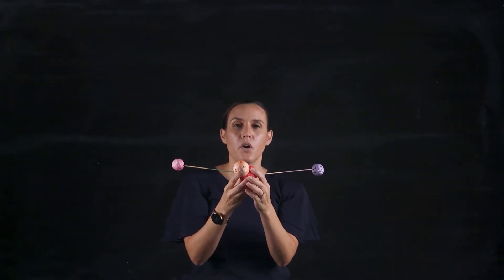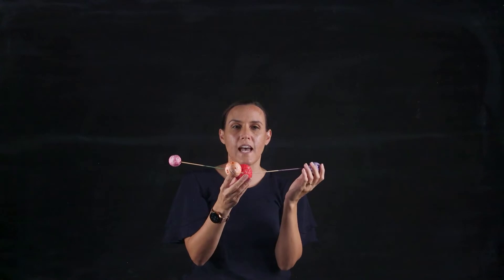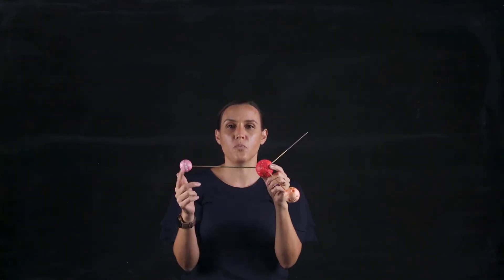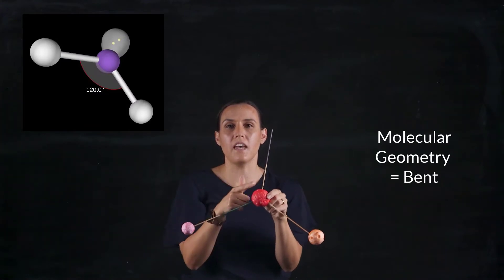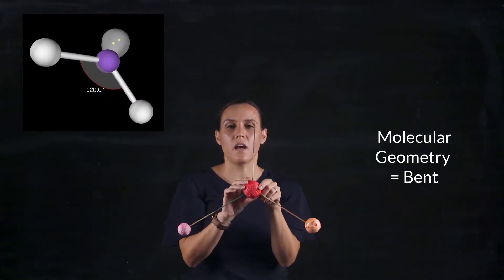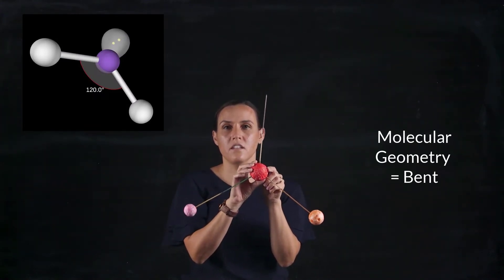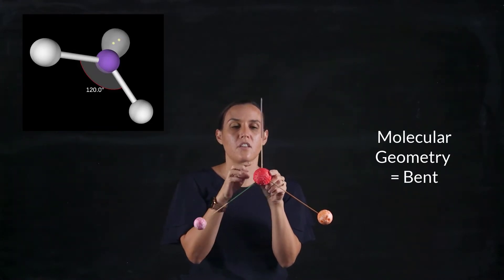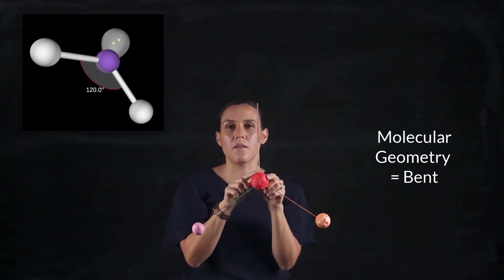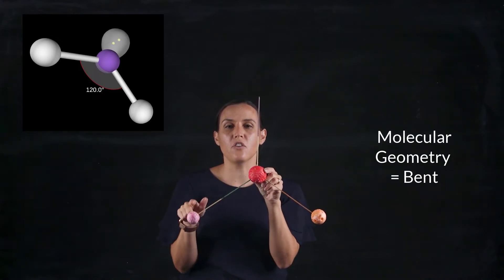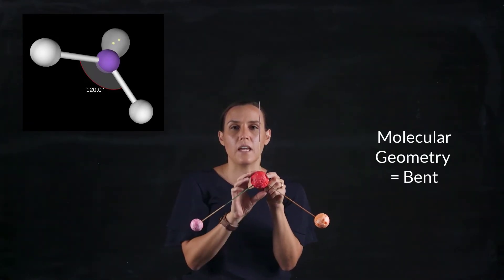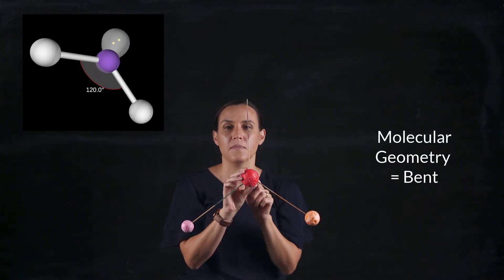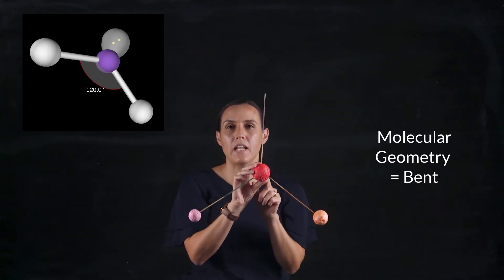Now if we were to replace one of those atoms and instead had a central atom with two bonding atoms and one lone pair, that would give us a bent geometry or bent shape for that particular compound. The lone pair is still taking up the same amount of space but you don't see that when you look at the shape — you're just looking at the shape between the atoms. So we've got a bent conformation.